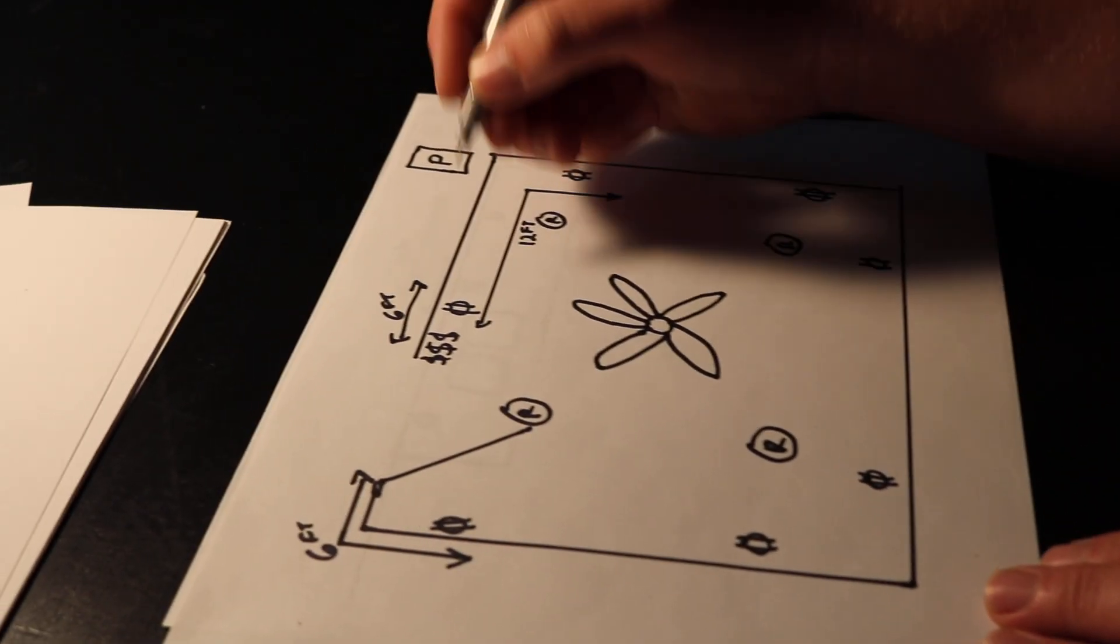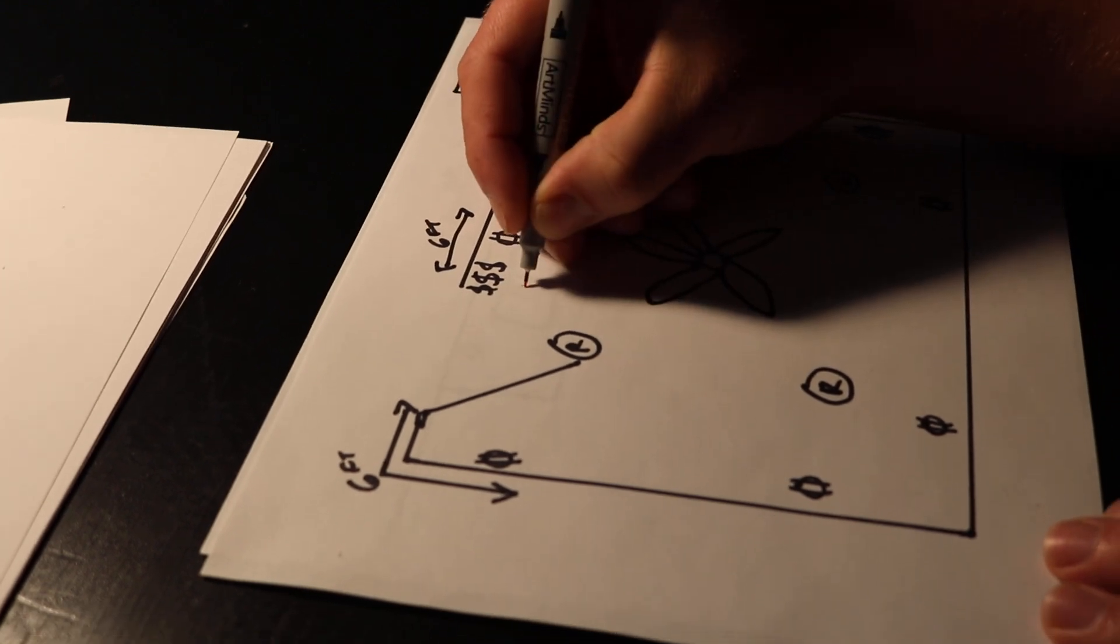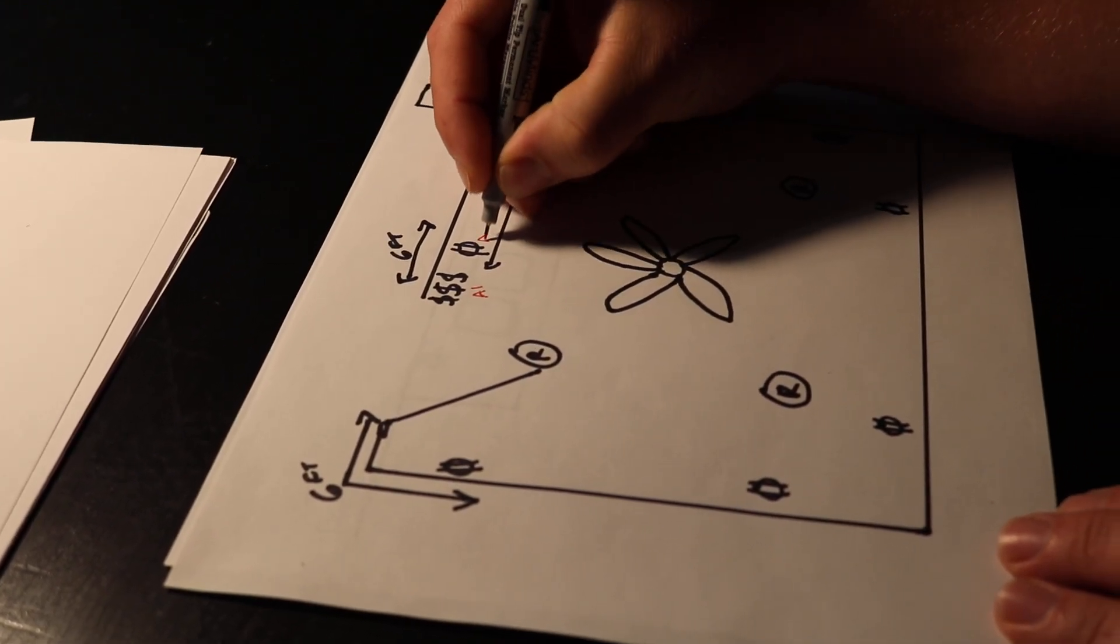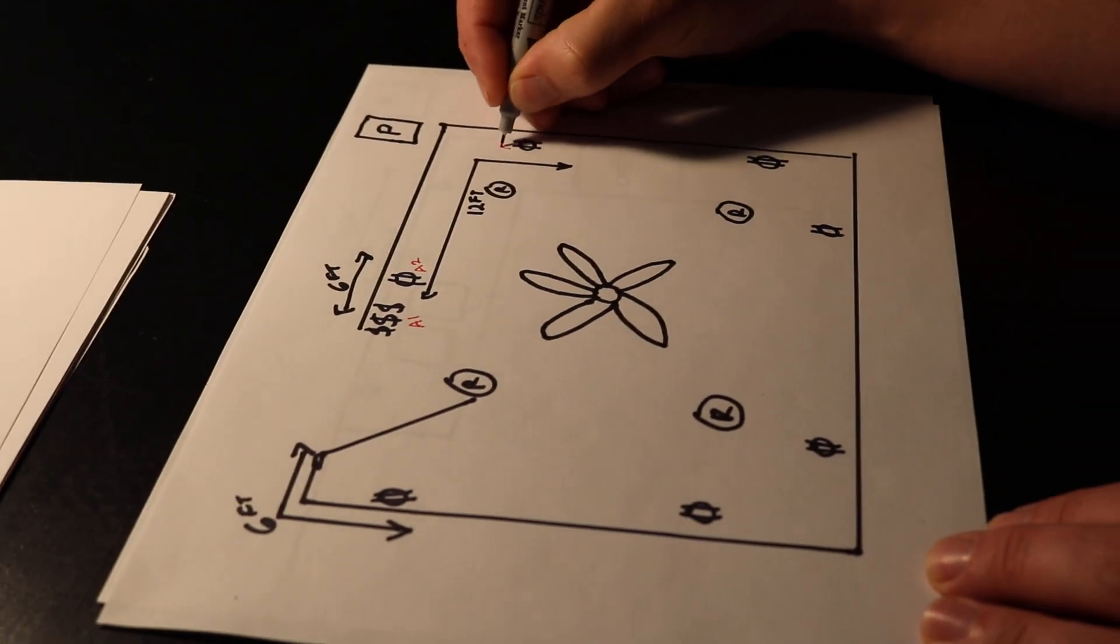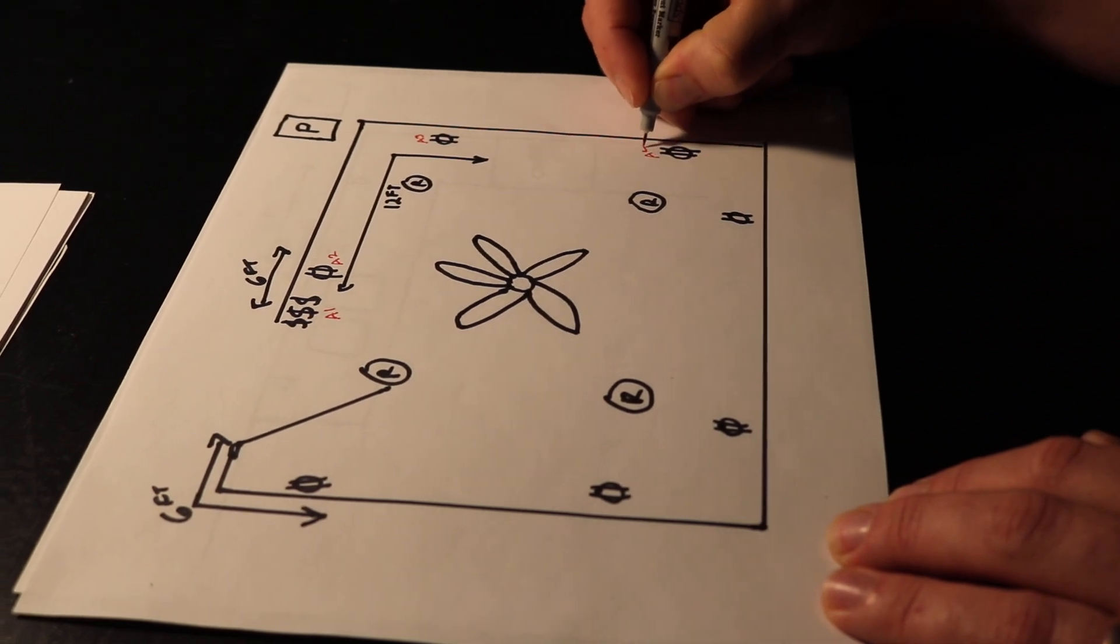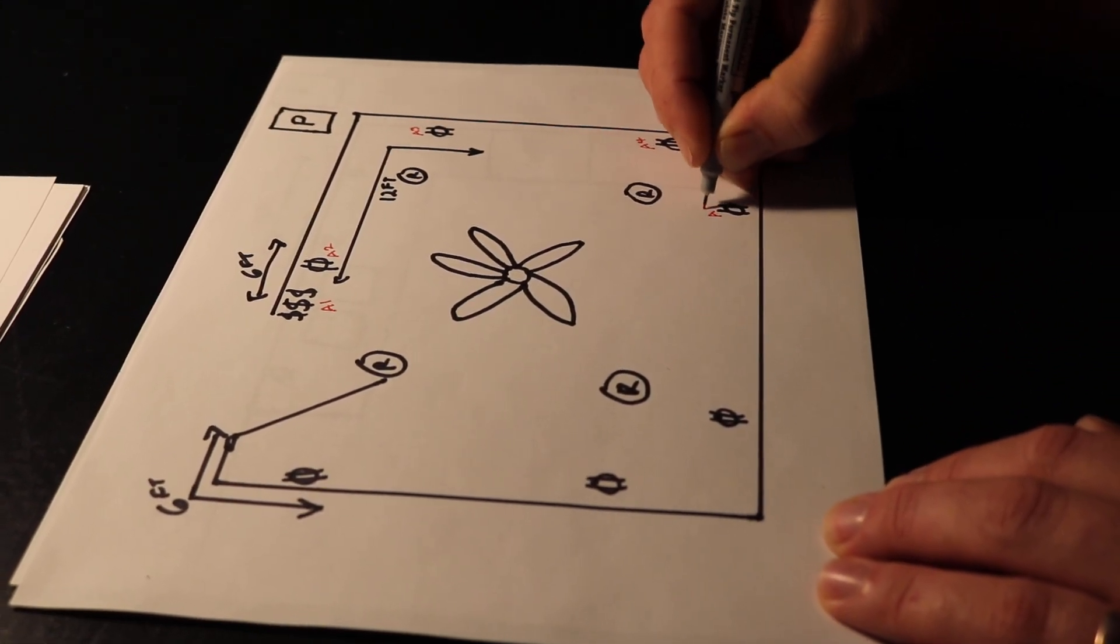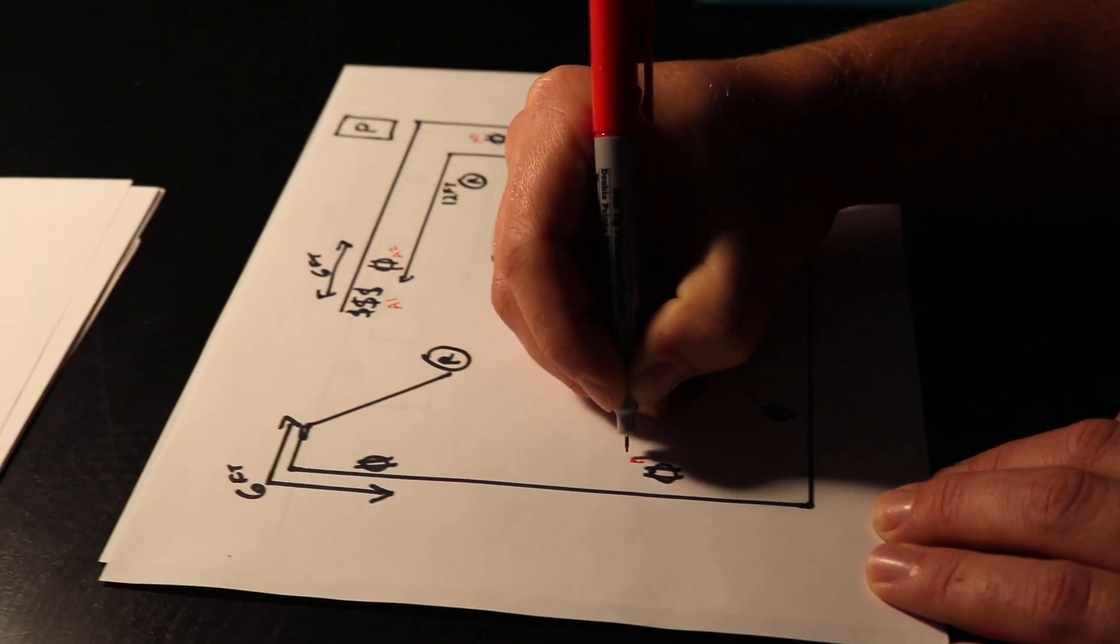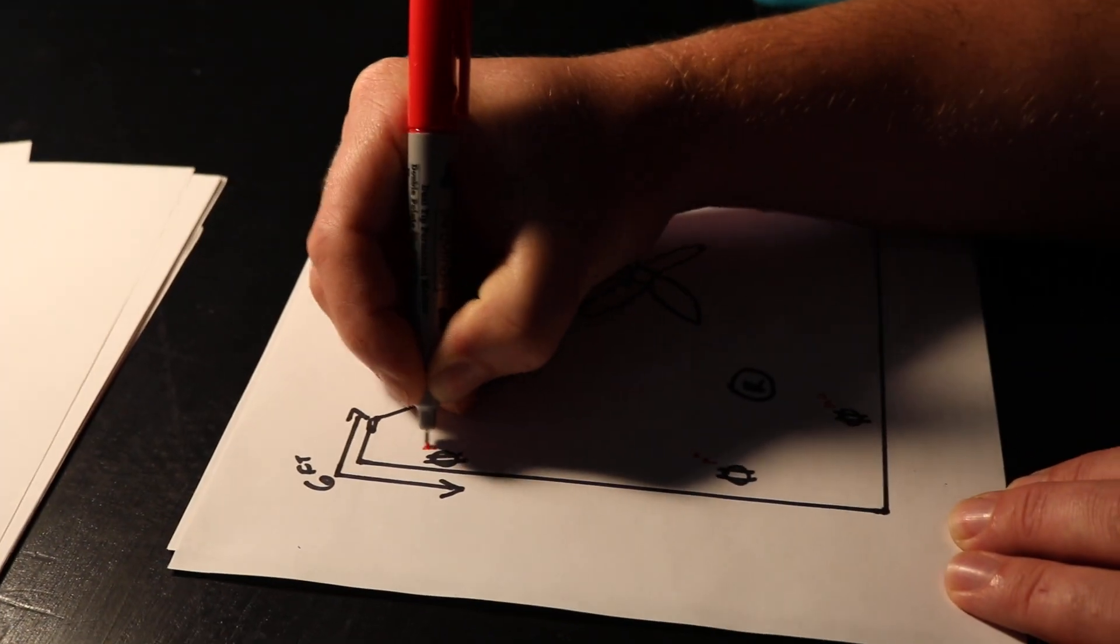So in this scenario I would go A1 and then this would be A2, A3, A4, A5, A6, A7, and then A8.